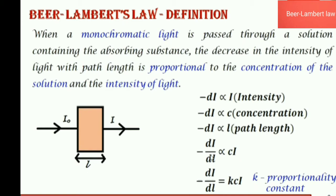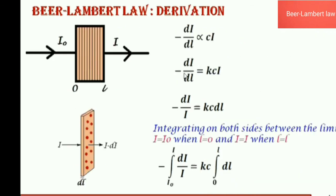The decrease in the intensity with path length is proportional to C and L. Once we remove the proportionality sign and replace it with an equality sign, we get a proportionality constant — it can be kappa or k depending on the textbook. Rearranging, we get minus dI/I = kC·dL. Now we integrate on both sides because this expression explains only one small division, but we want to know the decrease in intensity as light moves from 0 to L. We integrate with limits: I = I₀ when path length is 0, and I = I when path length is L.